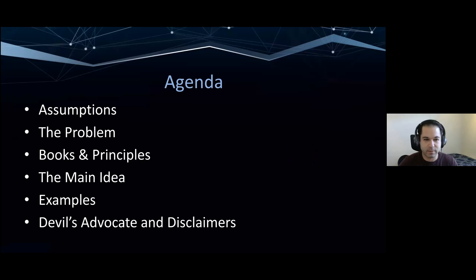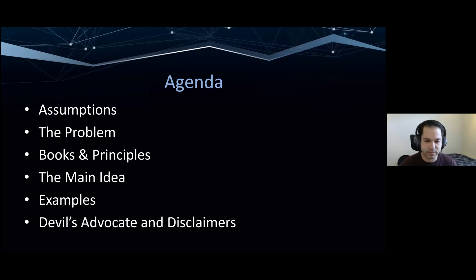So what I'm going to talk about: I'll go over some fundamental assumptions and principles that I have about cybersecurity and risk. I'll discuss some of the problems that I've seen when making decisions, some of the books and principles that have helped me formulate my hypothesis, and the way I operate with risk. We'll talk about the main idea with ATT&CK and how it helps, and then work through an example, and then also some devil's advocates, disclaimers, counterarguments, et cetera.